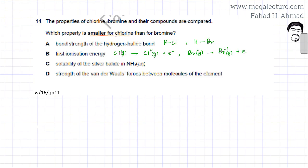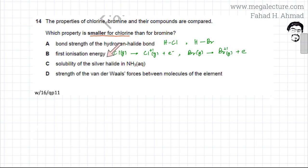The third property is the solubility of the silver halide in ammonia. AgCl is very soluble in ammonia — it dissolves in dilute ammonia — whereas AgBr is not very soluble and needs concentrated ammonia to dissolve. So AgCl has greater solubility in ammonia. This property is also greater for chlorine, not smaller, so option C is also not the answer we are looking for.